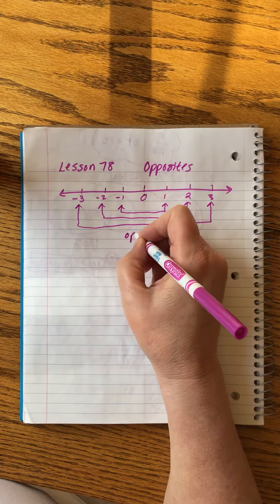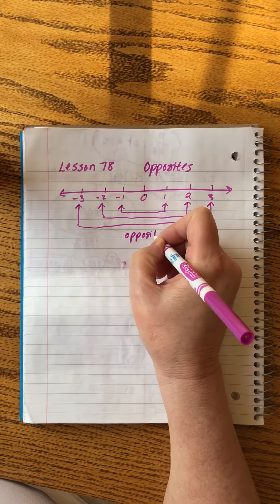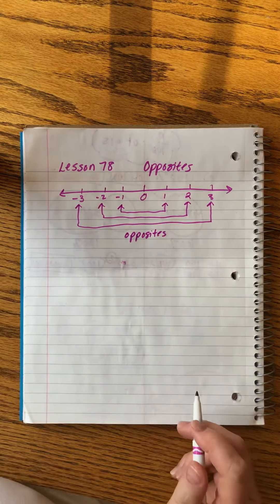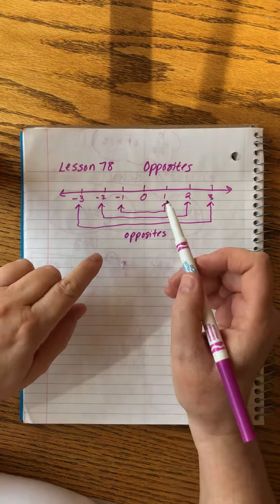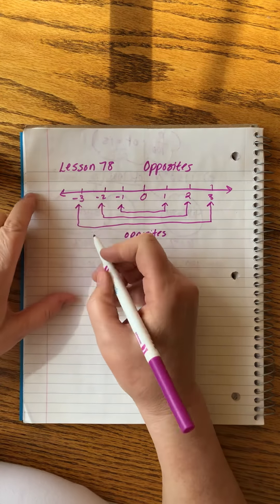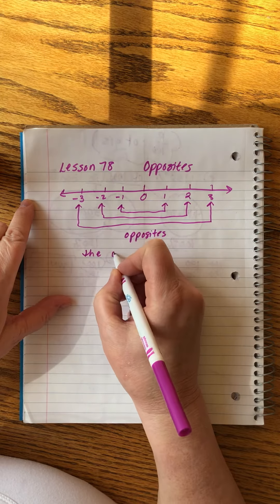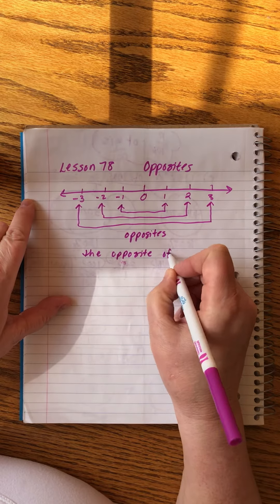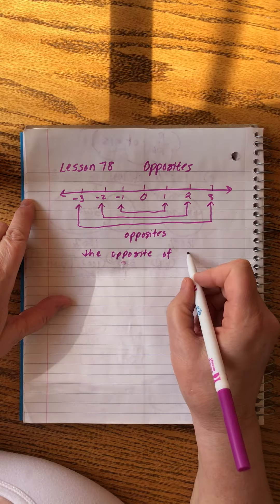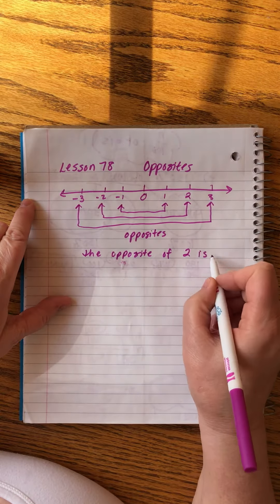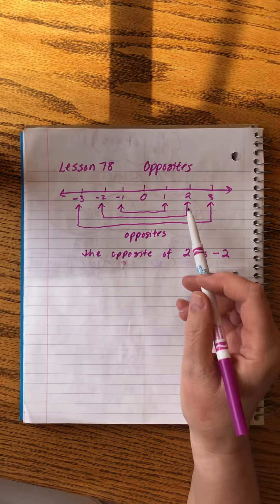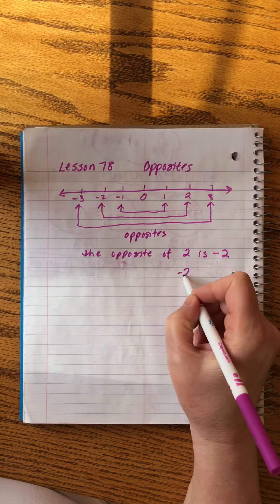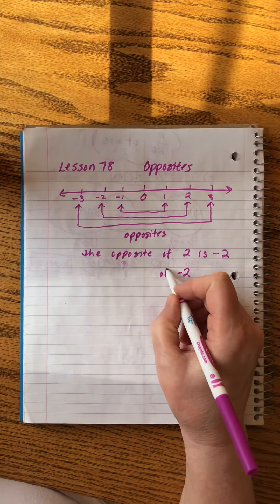We call those pairs opposites. Okay, so we can say that the opposite of two is negative two. Let me write it out. Okay, the opposite of two is negative two.